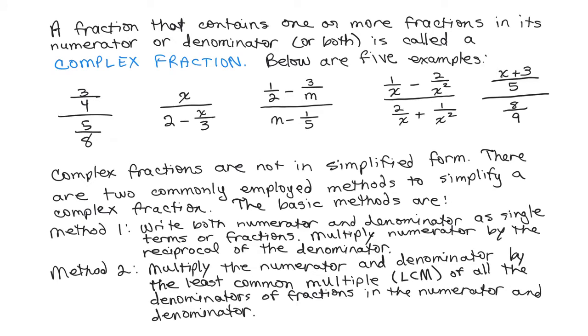A fraction that contains one or more fractions in either its numerator or denominator or both is called a complex fraction. Below are five examples. The first example, we have 3 fourths over 5 eighths, so it has a fraction in the numerator and a fraction in the denominator.